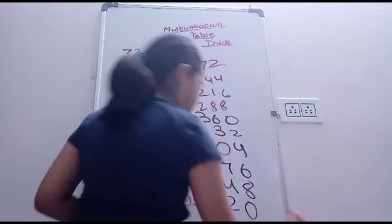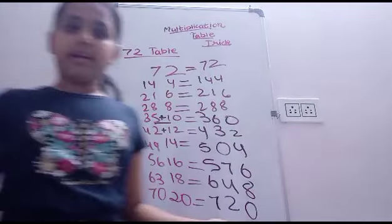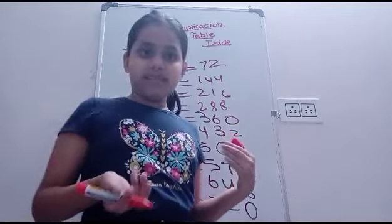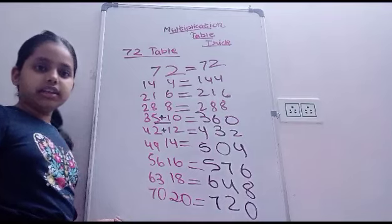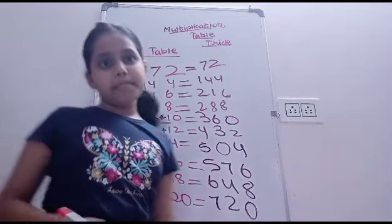And lastly we have this number, 720. Okay? So I think you have gotten all of it, all of the tables. Okay?